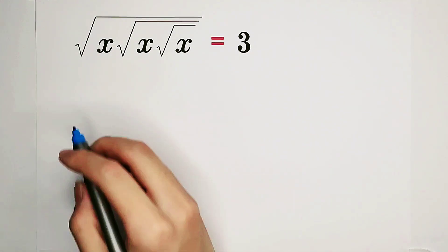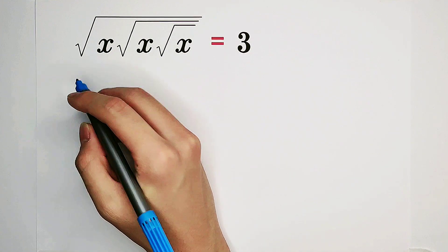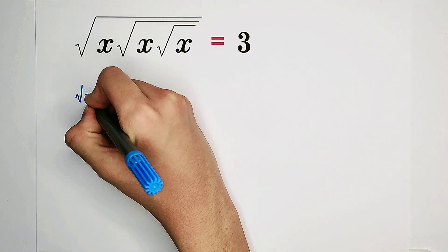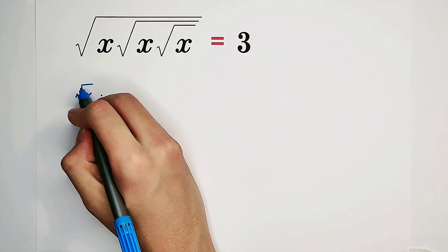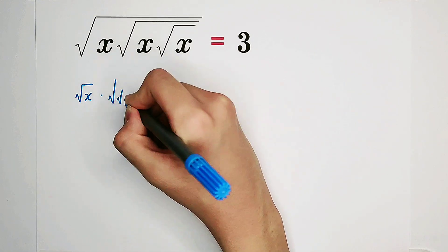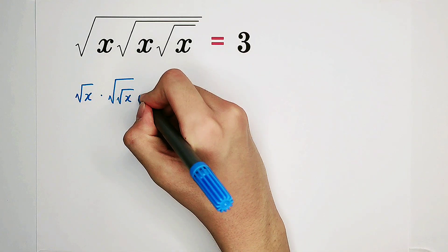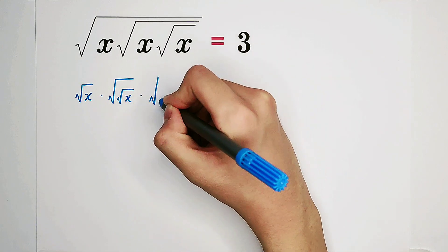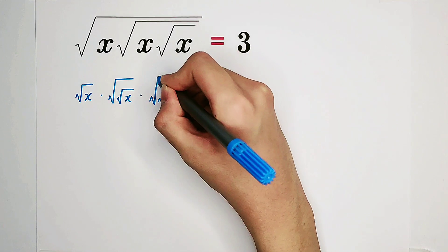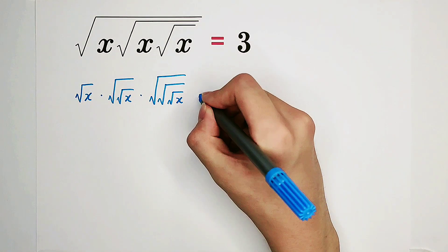So that means it has three square roots. What we can do is to separate them. The left side can be written as square root of x — it has only one square root over it — times square root of square root of x — it has two square roots — times square root of square root of square root of x — it has three square roots. And that equals three.